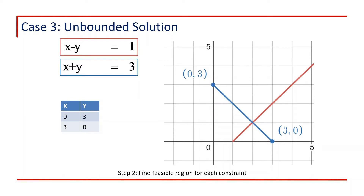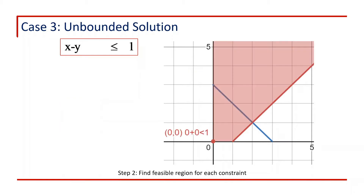Step 2 is to find the feasible region for each constraint. For the first constraint, x minus y less than or equal to 1, we test the point (0, 0): putting x equals 0 and y equals 0 gives 0 less than or equal to 1, which satisfies the constraint. So the feasible region for the first constraint is the region from the line towards the point (0, 0). Since both variables are positive, the region is restricted by x greater than 0 and y greater than 0, and it is shown in red.